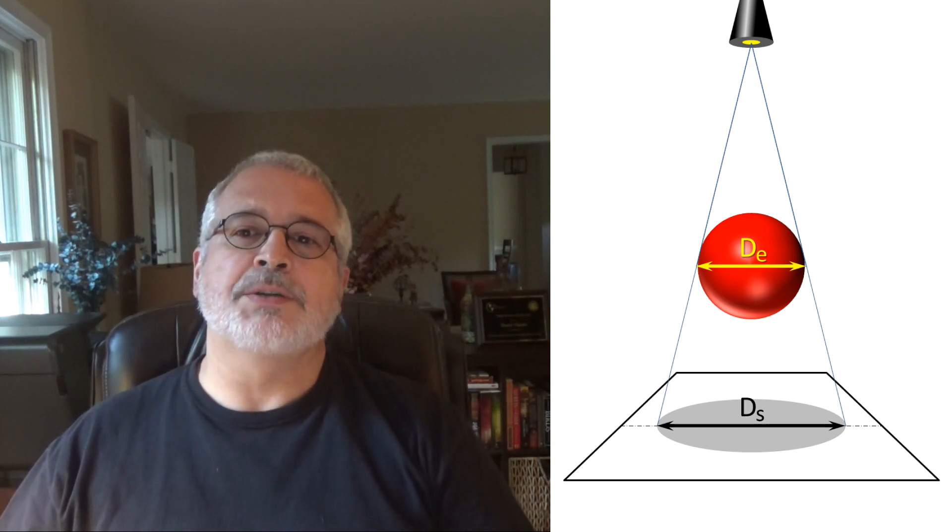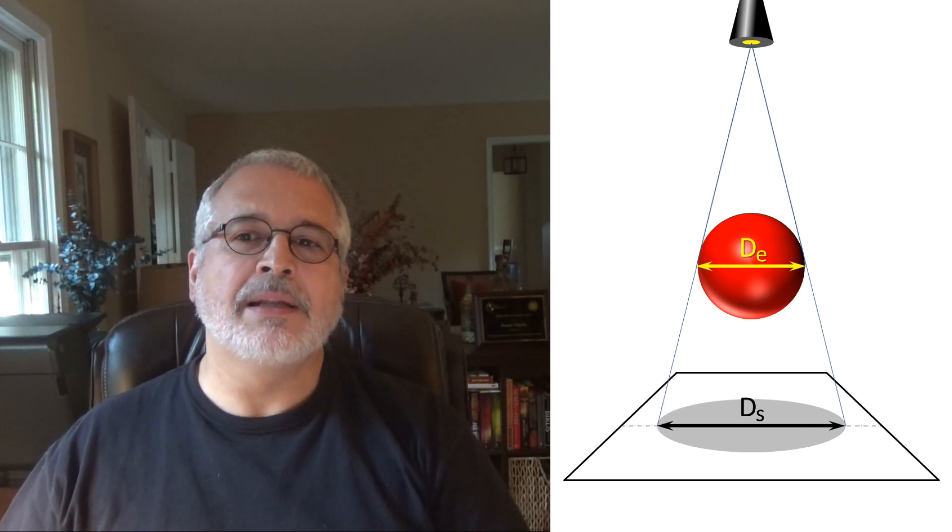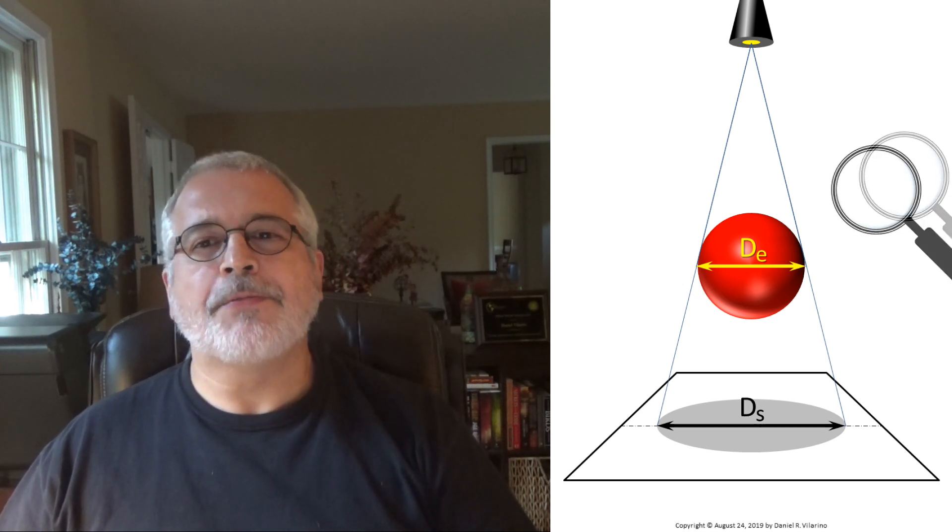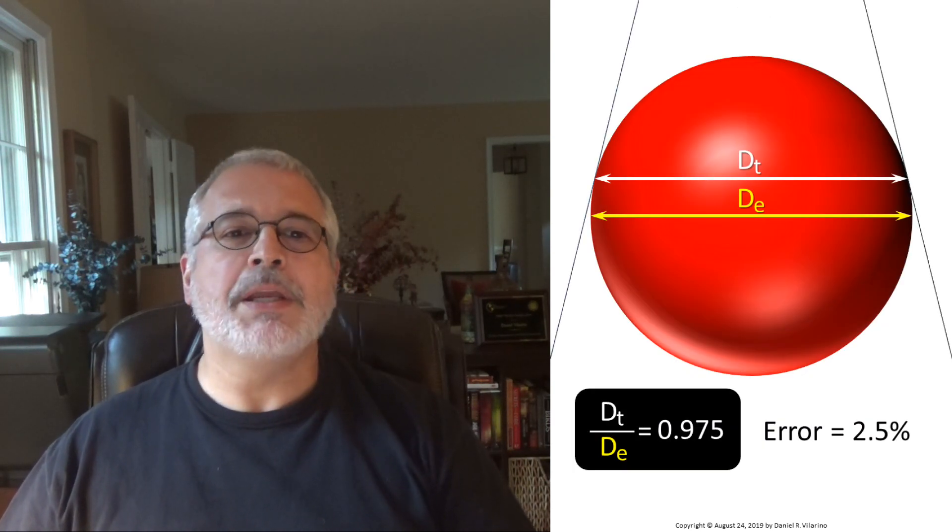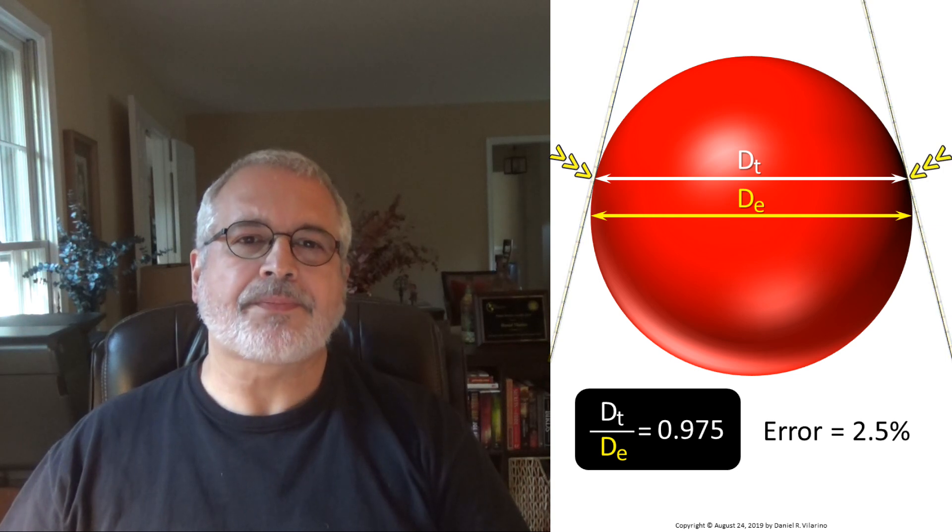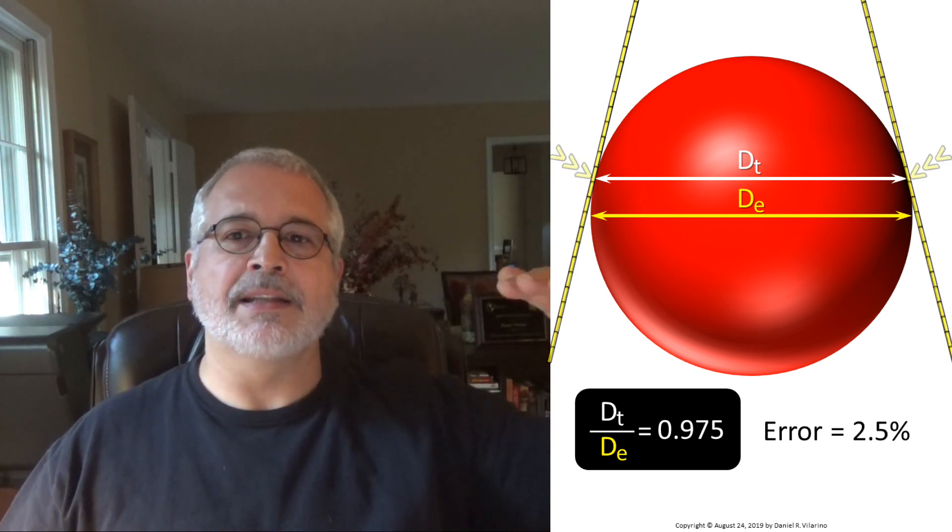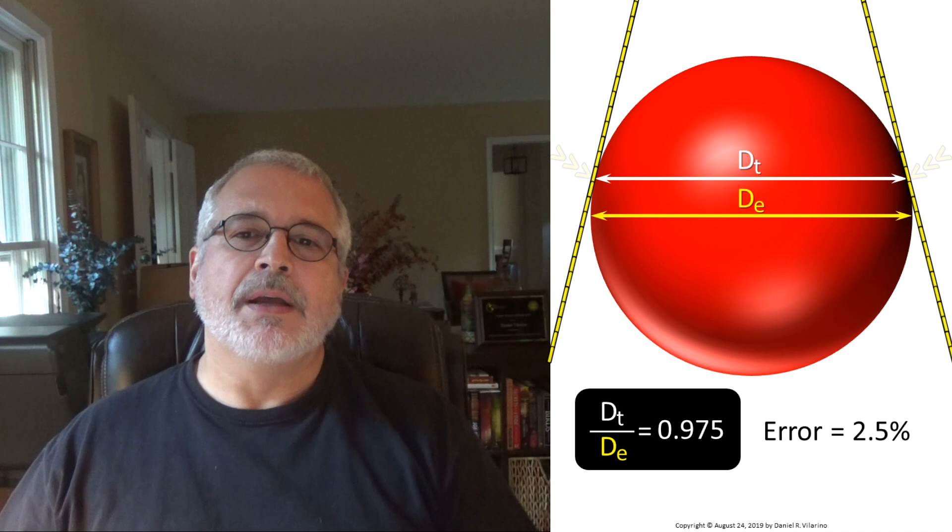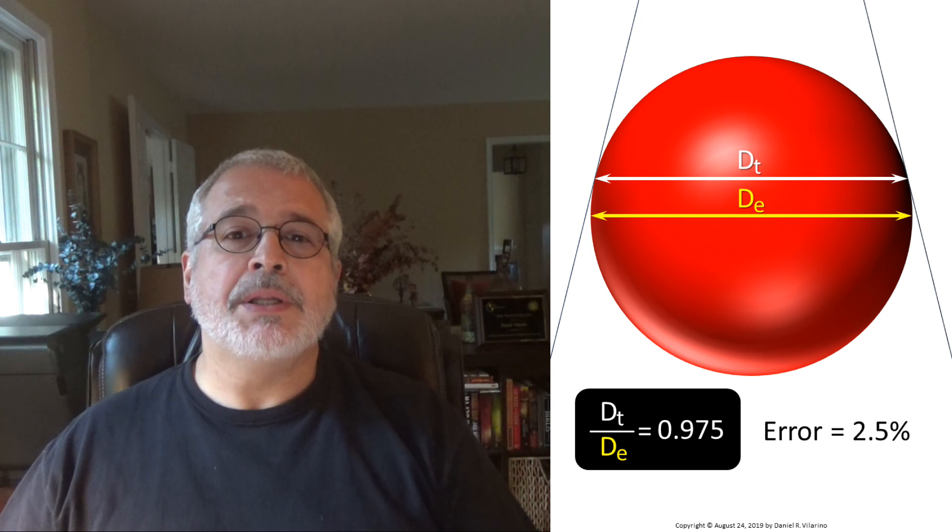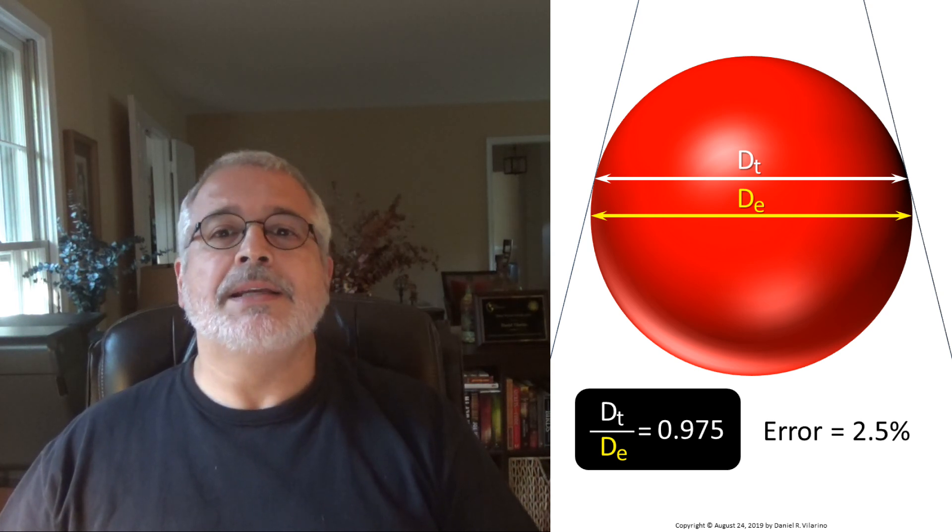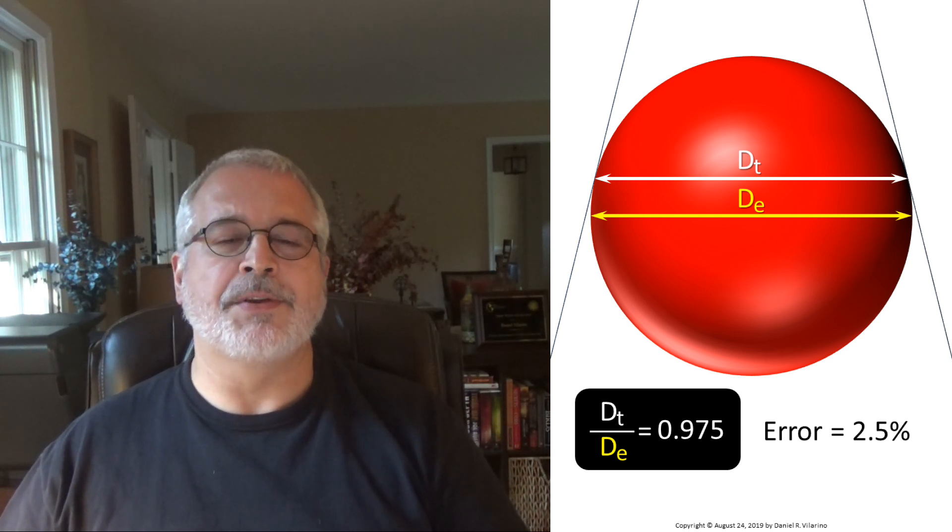I would like to do a small parenthesis, a technical one, to explain an issue that can be a little bit confusing. I am going to magnify the size of the sphere to check from a closer point the beams of light projecting the shadow. The beam of light that projects the shadow is not touching the sphere exactly in its center but a little above that point where the beam is tangent to the sphere. The distance between the two opposing tangent beams is DT and that distance is a bit smaller than the actual diameter of the sphere, DE.